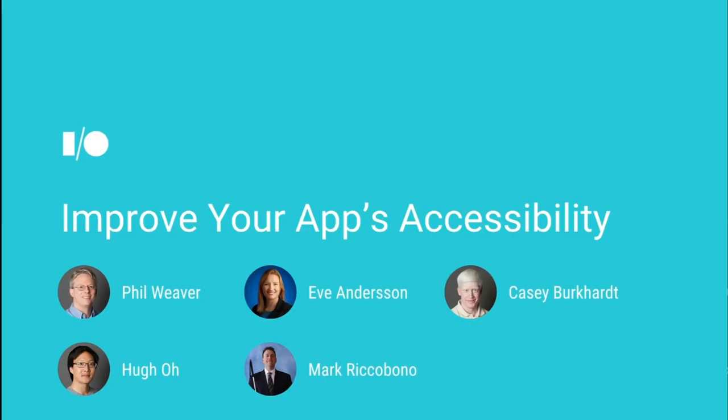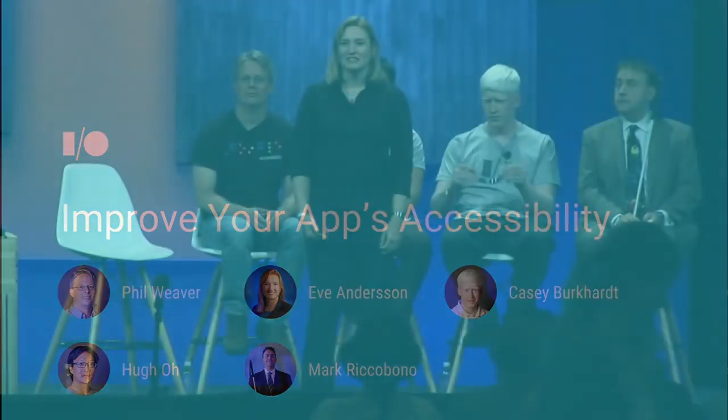Good afternoon, everyone. My name is Eve Anderson. I lead the accessibility engineering group at Google. I'm here with some of my colleagues: software engineers Bill Weaver, Hugh Oh, and Casey Burkhart. We're also joined by a very special guest, Mark Riccobono, the president of the National Federation of the Blind. Today, we're going to talk about improving your app's accessibility to make it work better for people with disabilities.